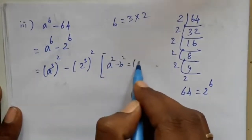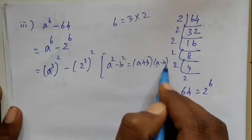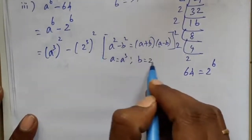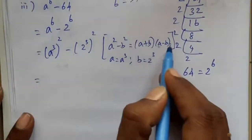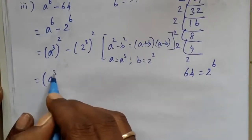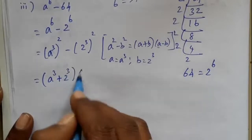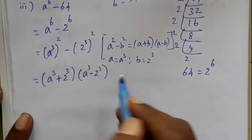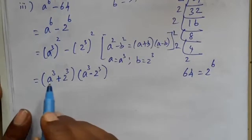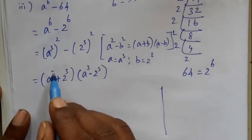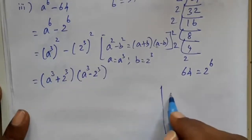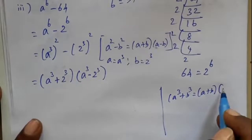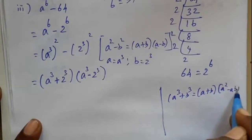A squared minus B squared equals A plus B and A minus B. If we use a cube, we use A squared plus B squared. A cube plus B cube gives us A plus B and A minus B. Now we will learn the cube form. The formula is: A squared plus B squared equals A squared minus AB plus B squared.